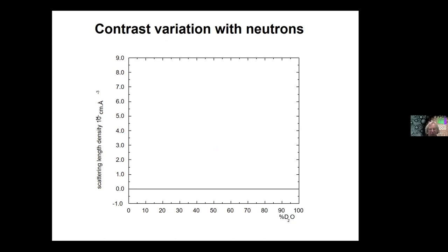There is a question from Jennifer. She's asking: with the changing from D₂O to H₂O or the other direction, there's always concern that the structure of your sample actually changes when you go between them. How much is that actually an issue, and does it vary depending on what you're looking at?